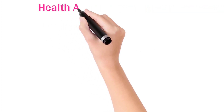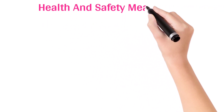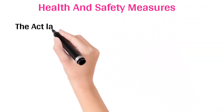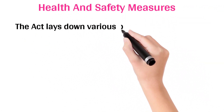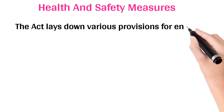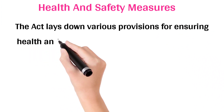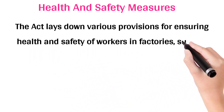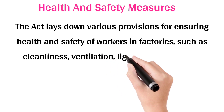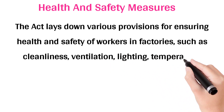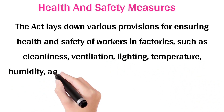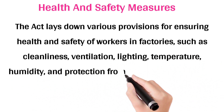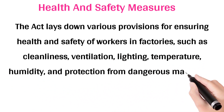Health and Safety Measures: The Act lays down various provisions for ensuring health and safety of workers in factories, such as cleanliness, ventilation, lighting, temperature, humidity, and protection from dangerous machinery.